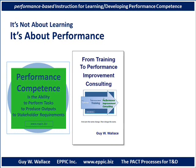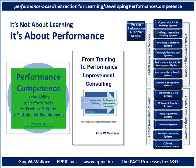Many times, the inability to perform tasks, to produce outputs to stakeholder requirements, is not due to the individual's knowledge and skills. It could be because the organization and job is designed ineffectively. It could be because the staffing and succession systems are not aligned properly, or the recruiting and selection systems, the training and development systems, performance appraisal and management, compensation and benefits, or rewards and recognition.